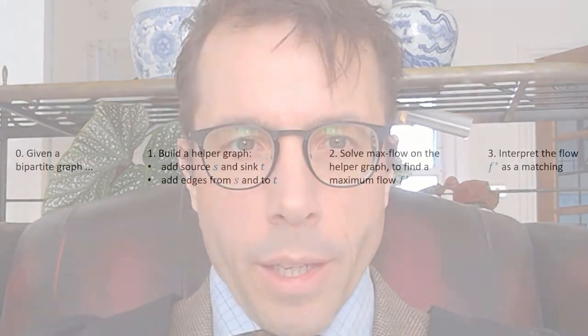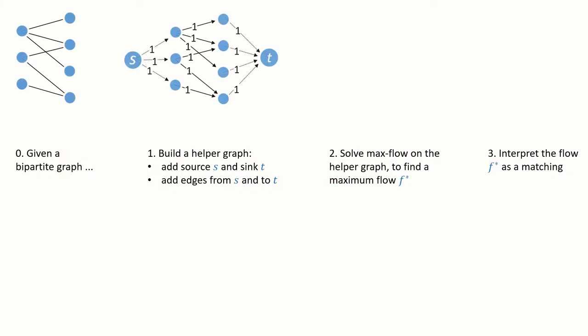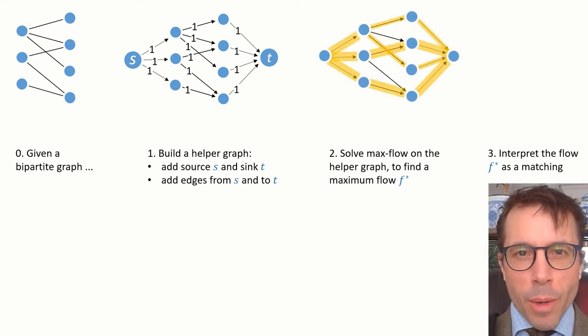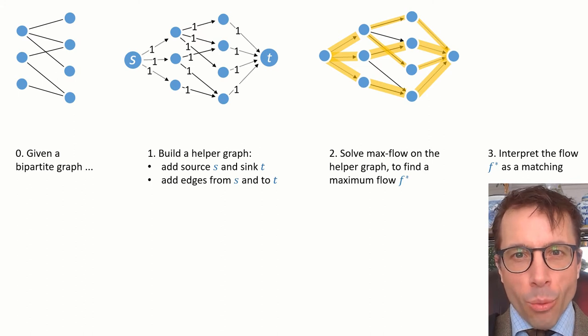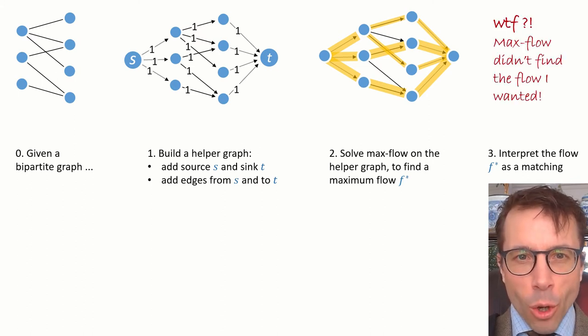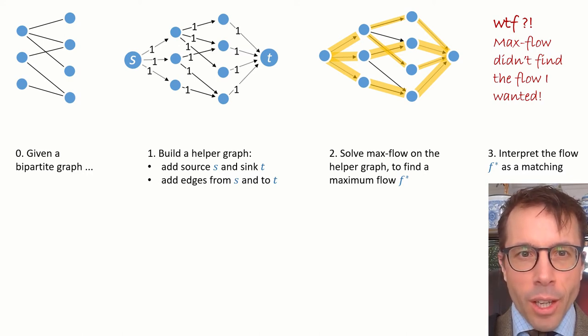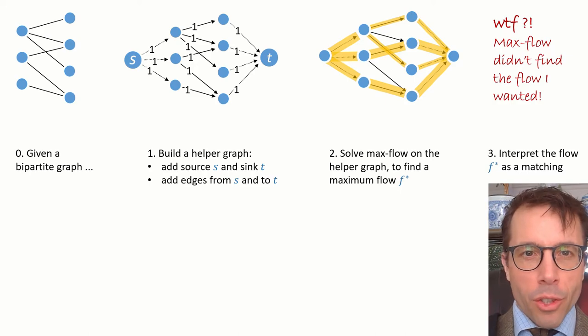Let's run through this proposed algorithm once more. And this time, I'm going to highlight what could go wrong. Okay, we start with a bipartite graph, we turn it into a flow network as before, and then we find a maximum flow. But what if our maximum flow algorithm returns fractional flows? That's a perfectly good solution to the flow problem, splitting some of the flow so half of it goes one way and half goes the other. But it's definitely not what we want here. We can't take this max flow F* and say, here you go, here's your maximum size matching. It just doesn't work.